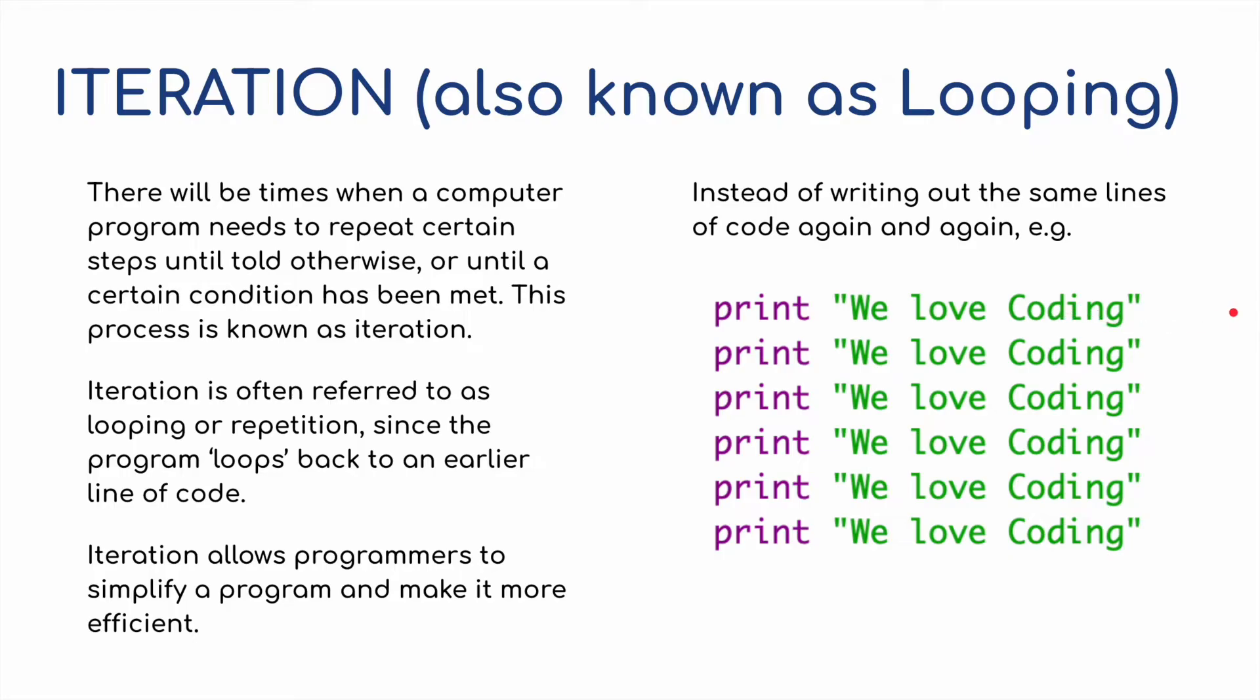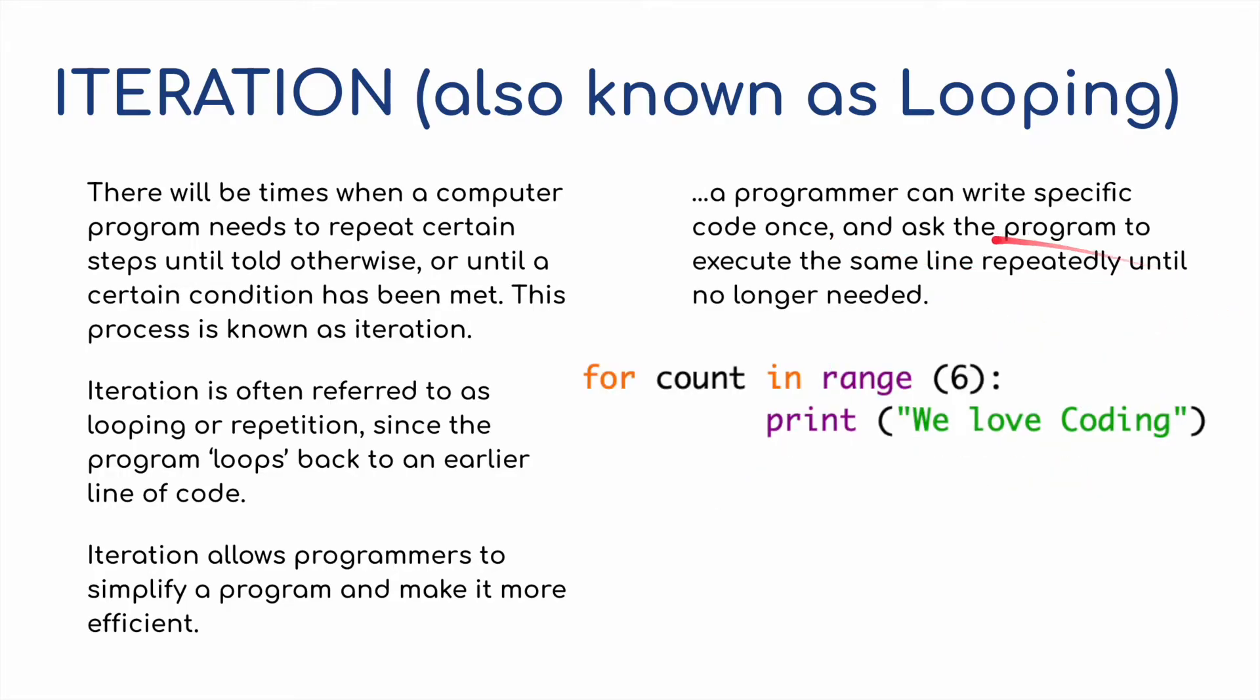Iteration allows programmers to simplify a program and make it more efficient. Instead of writing out the same lines of code again and again, like print, we love coding, over and over again, we could simply use a for loop, and we could set a count in range of six. So it's going to repeat everything underneath six times, so it's going to print out we love coding six times. I'll show you this in Python, how it works.